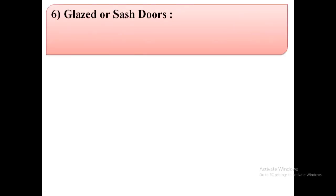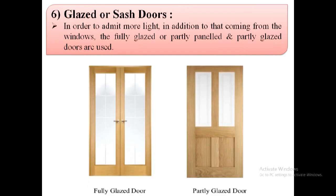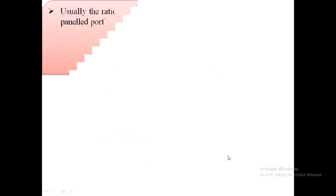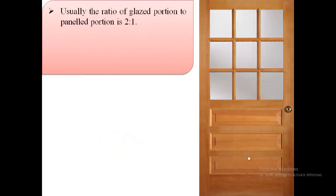The next type of door is glazed or sash doors. In order to admit more light in addition to that coming from the windows, fully glazed or partly paneled and partly glazed doors are used. The first image shows a fully glazed door and the second image shows a partly glazed door. In this image we can see the glazed portion and the panel portion, with the ratio of the glazed portion to the panel portion being 2 to 1.